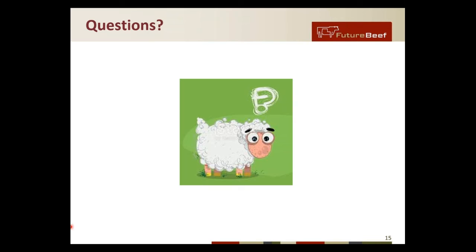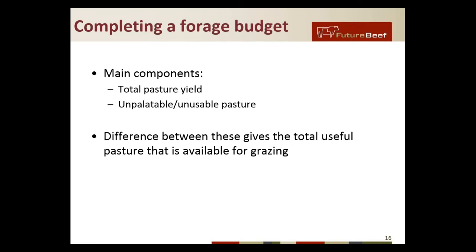On to completing a forage budget. Generally there are two main components to the supply side: the total pasture yield and the unpalatable or unusable pasture, and the difference between these two is the total useful pasture available for grazing. For those with sheep, this can still be done as a guide, but sheep have quite different grazing behaviour — if you have a lot of herbage or annual species, they'll eat those first before going to a bigger tussock — so it's a little different for sheep, but a good place to start.